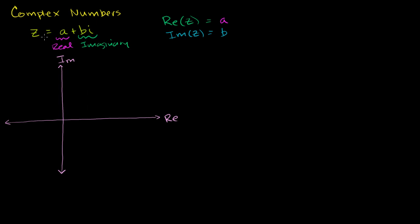In the example of z being a plus bi, we would plot it as a position vector, where you have the real part on the horizontal axis — so let's say this is a — and then the imaginary part along the vertical axis, or the imaginary axis. So let's say that this is b. And so we would represent in an Argand diagram the vector z as a position vector that starts at 0 and has a tip at the coordinate (a, b).